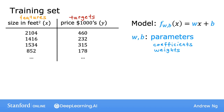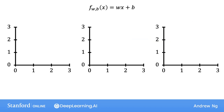Now let's take a look at what these parameters w and b do. Depending on the values you've chosen for w and b, you get a different function f of x, which generates a different line on the graph. Remember that we can write f of x as shorthand for f_wb of x. We're going to take a look at some plots of f of x on a chart, which will help you build intuition on how w and b, the parameters, determine f.